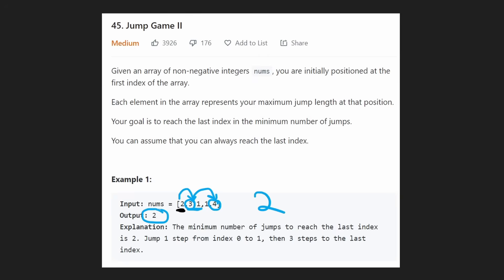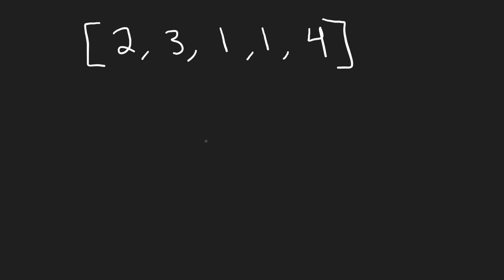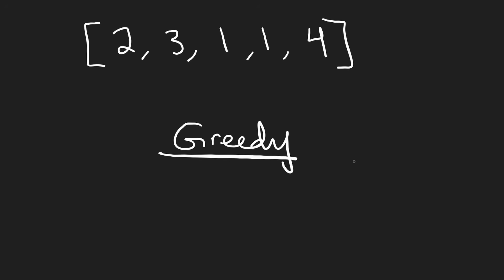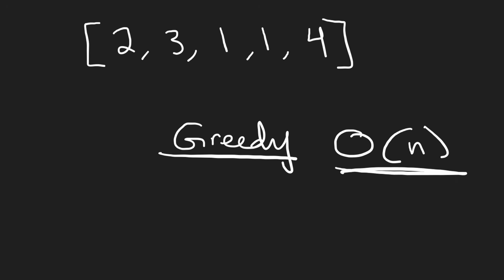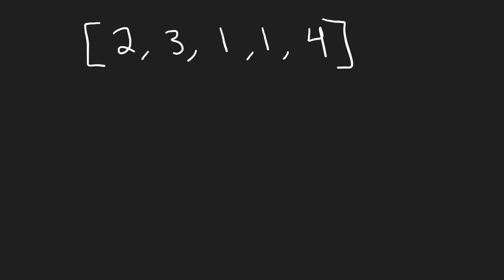So our output can be two because we're looking for that minimum number of steps. You might know that this is a problem that can be solved with dynamic programming, just like the first Jump Game solution, but I'm not really going to go over the dynamic programming solution because this problem also has a greedy solution. It turns out that the greedy solution is a linear time solution — O(N) — whereas the dynamic programming solution is O(N²).